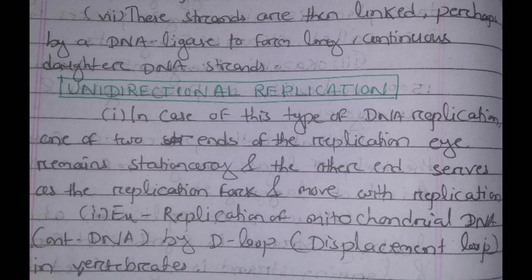In unidirectional replication, one of the two ends of the replication eye remains stationary, and the other end serves as the replication fork and moves with the replicate.